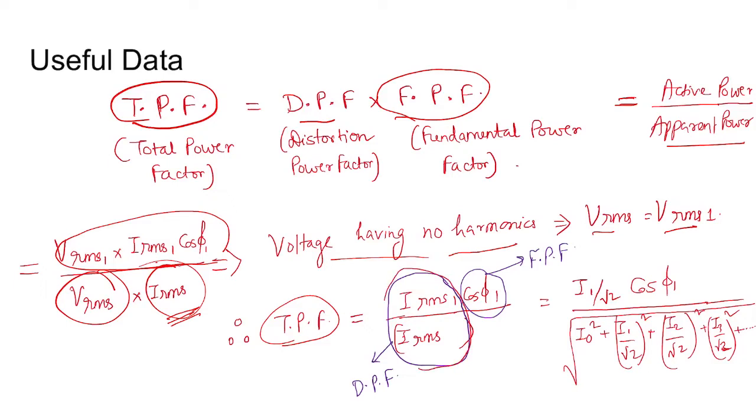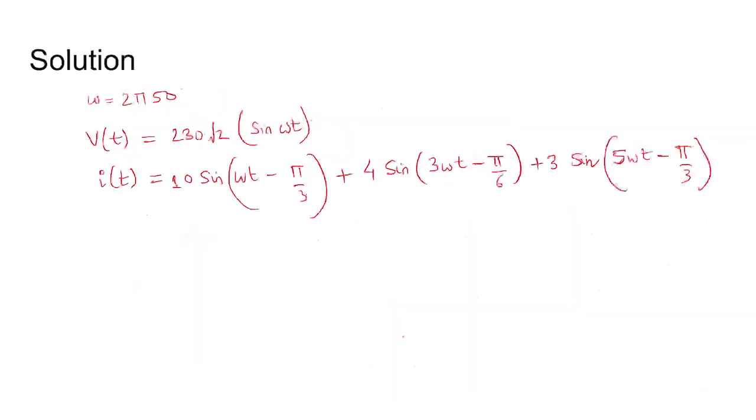So this Irms1 by Irms is the distortion power factor, and cos φ1 is the fundamental power factor. Irms is given by the square root of harmonic components' RMS values, and I1/√2 is the fundamental RMS. So I1/√2 divided by this factor multiplied by cos φ1 will give you the total power factor.